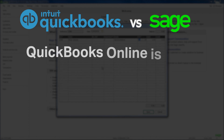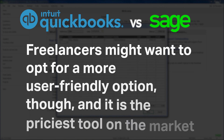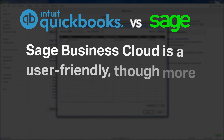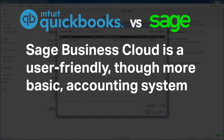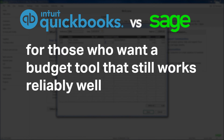QuickBooks Online is the best accounting software for most small businesses. Freelancers might want to opt for a more user-friendly option though, and it is the priciest tool on the market. Sage Business Cloud is a user-friendly, though more basic, accounting system for those who want a budget tool that still works reliably well.